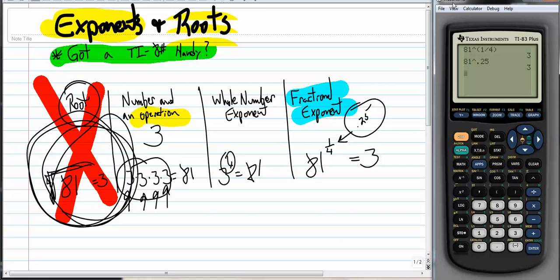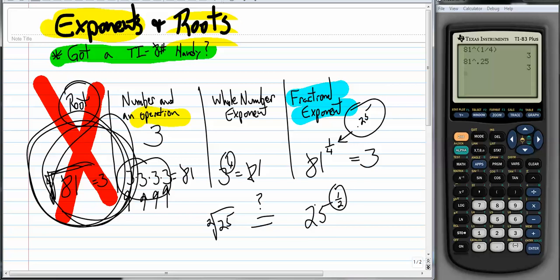But hey, that's just me. So does that mean that... Like, let's say we had 25 to the 1 half power. Would that be the same thing as saying the square root of 25? Well, it should be, right? Because 1 half power is, you know, 25 times itself half of a time. So let's do that. Let's go 25 to the, put my parentheses, 1 half power. And I get 5.